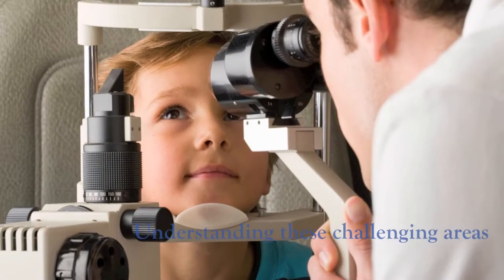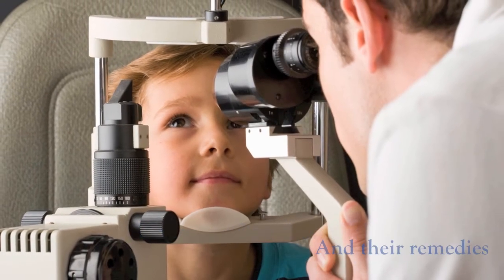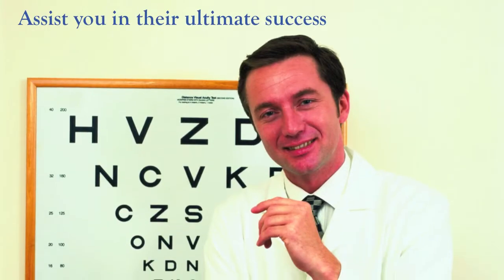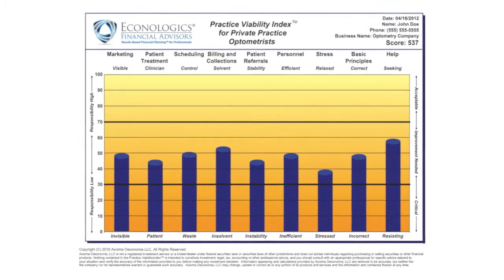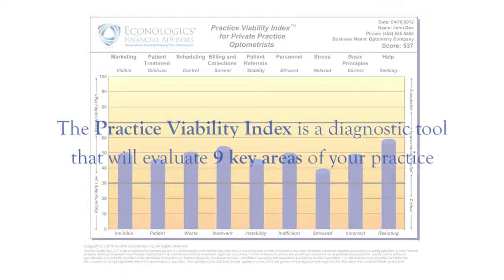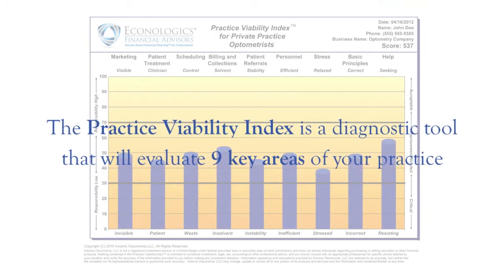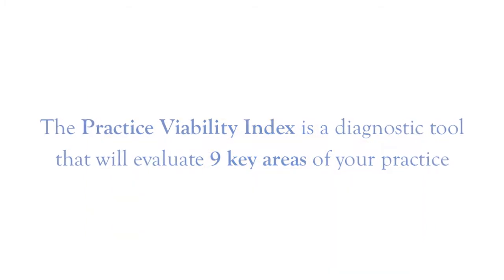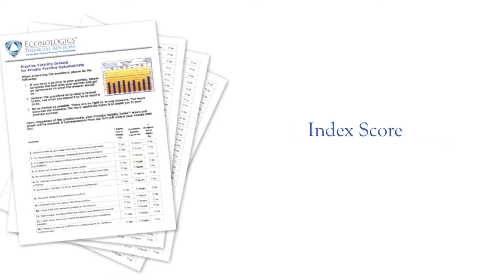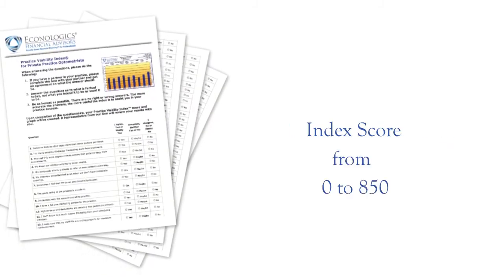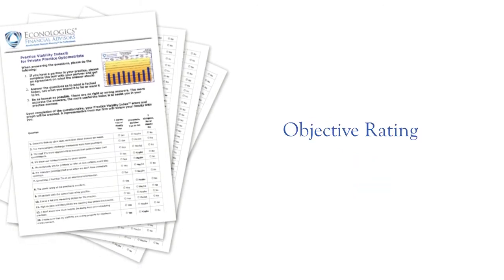There are several factors that can inhibit the viability of a practice and its ability to do these things. Understanding these challenging areas and their remedies can assist you in their ultimate success. Introducing the Practice Viability Index for private practice optometrists — a diagnostic tool that will evaluate nine key areas of your practice. A practice must achieve proficiency in these major areas to experience success in gross income and profit. The online questionnaire asks 90 simple questions, then provides an index score that ranges from 0 to 850 and an objective rating of the strengths and weaknesses of your practice.